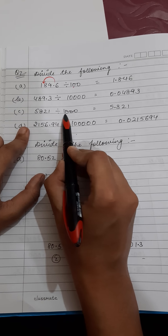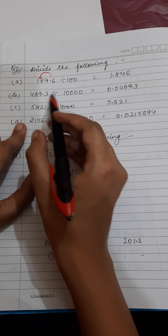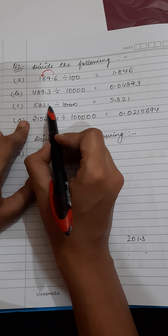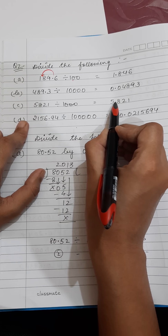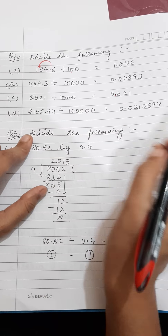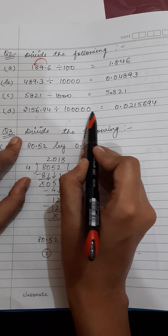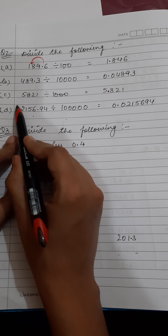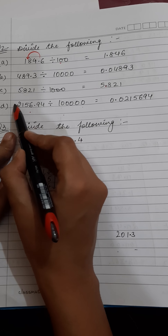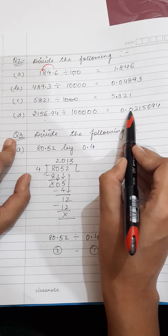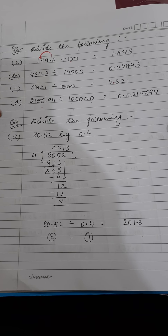Part c: 5821 divided by 9000 — three zeros — and there is no decimal in 5821, so you start from the end: one, two, three, and then place the decimal. Part d: 2156.94 divided by one lakh — five zeros — the decimal moves back five places: one, two, three, four, and the fifth digit is not there so place a zero there, then the decimal. That completes question 2; do this in your notebook.